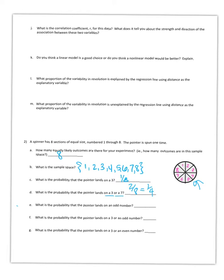What is the probability that the pointer lands on an odd number? We can count up the odd numbers — we've got 4 of them. So 4 eighths, which is equal to 1 half.